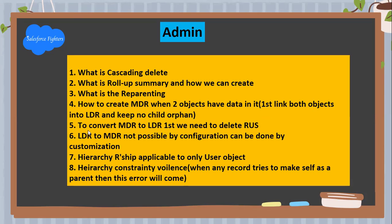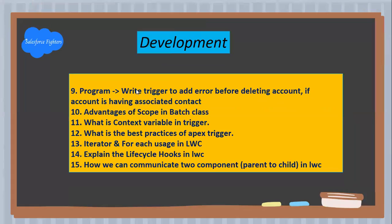To convert a master-detail relationship to a lookup relationship, we first need to delete the existing relationships. Converting a lookup to master-detail is not possible by configuration but can be done by customization. Hierarchy rules are applicable to the Users object only. A hierarchy constraint violation occurs when any record tries to make itself its own parent.